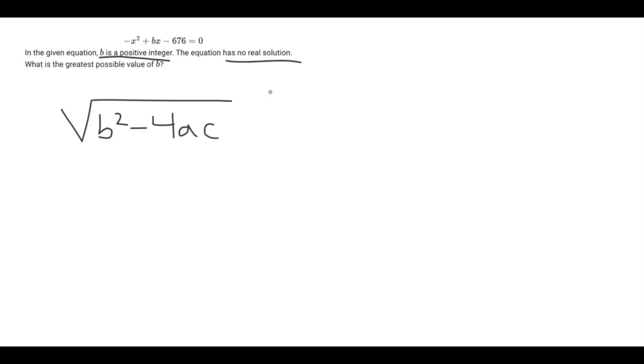The discriminant determines the number of solutions a quadratic function has. If this value is positive, that means it has two solutions. If it is negative, that means it has zero solutions. And if it's equivalent to zero, that means it has one real solution.